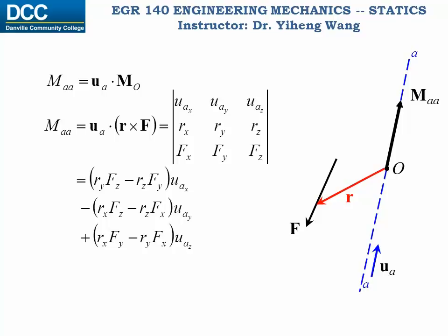Also, we know that dot product is a scalar. Therefore, if you want to find the moment along AA axis as a vector, you need to attach the unit vector UA to it.